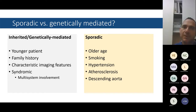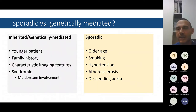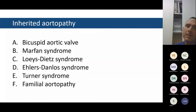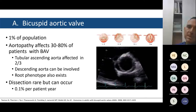Characteristically, inherited aortopathies affect generally younger patients with a family history. Often we have syndromic patients with characteristic features. In contrast, acquired aortopathies are sporadic, generally affecting the older population with risk factors. The inherited aortopathies we will discuss are mainly bicuspid aortic valve aortopathy, Marfan syndrome, Loeys-Dietz, Ehlers-Danlos syndrome, and familial aortopathies.